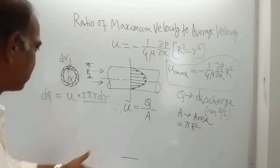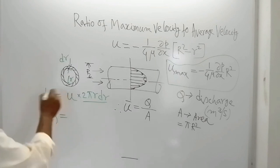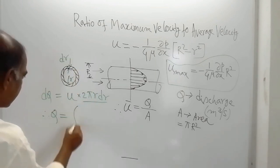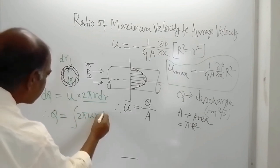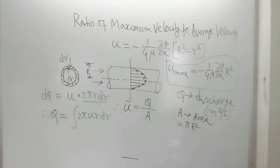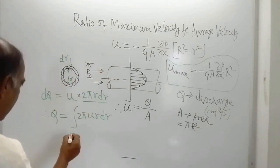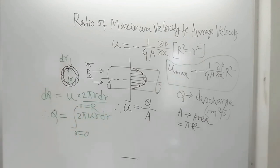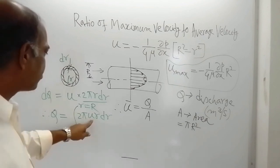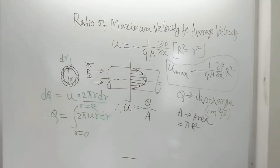To get the total discharge, we integrate this expression. So Q equals the integral from r=0 to r=R of U · 2πr · dr. Here 2 and π are constants, but U is not a constant — it is a function of r.